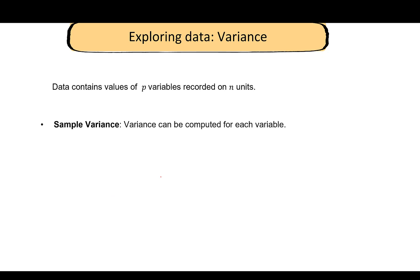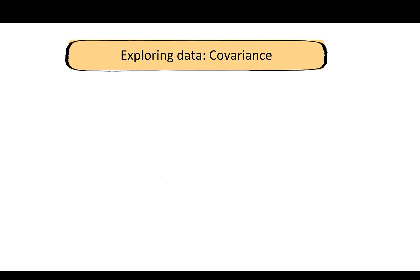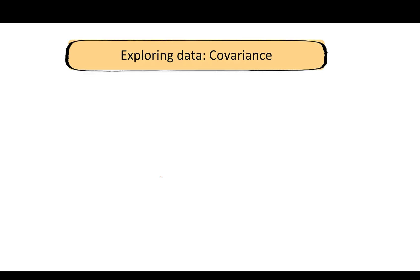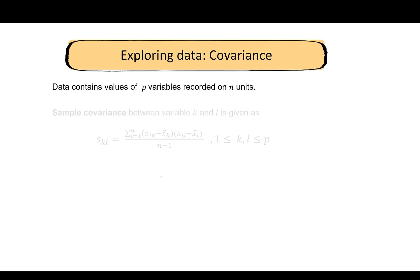Next, let's look at variance. We can calculate the variance for each variable. Since we have p variables, we will have p variances. The formula for the variance of the jth variable is the standard formula that most of you are familiar with.